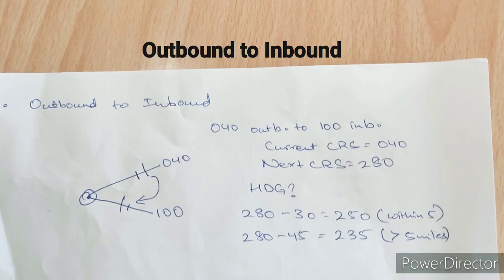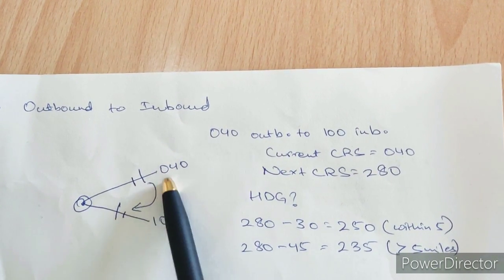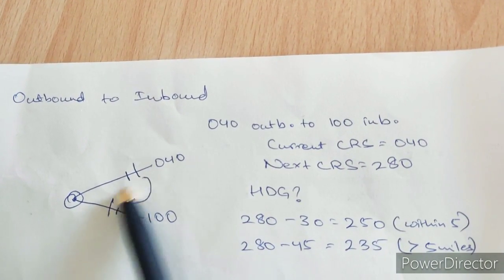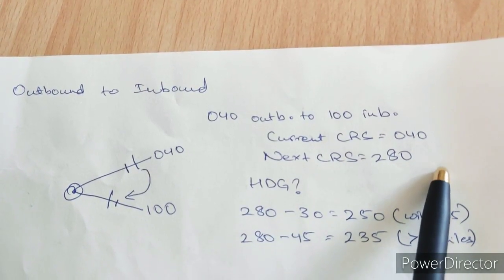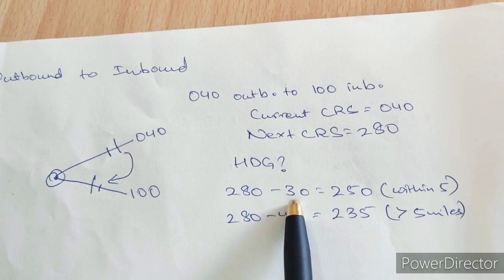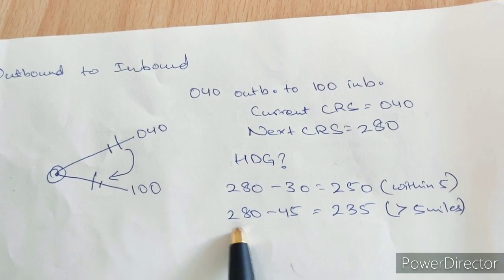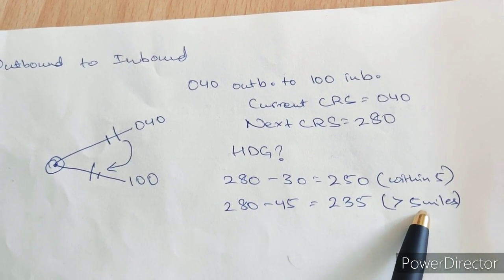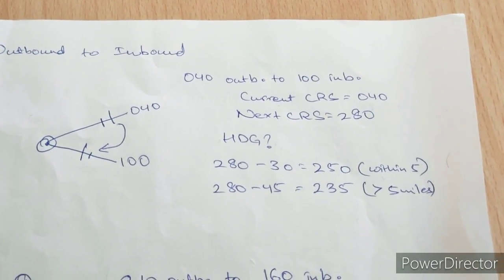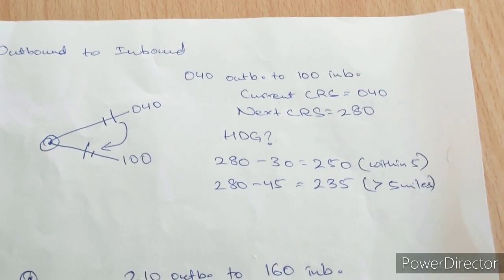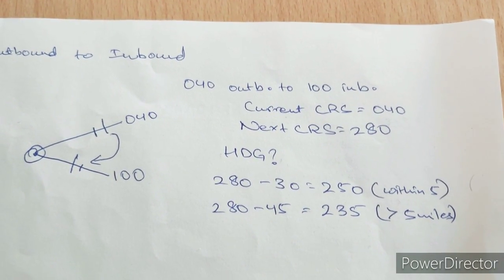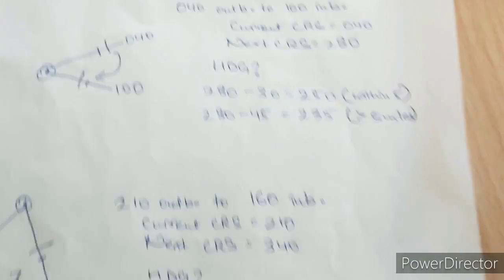Let's talk about outbound to inbound. You are going outbound on radial 040 and need to come inbound on radial 100. Your current course is 040 — the outbound radial. Your next course will be 280 — the opposite of 100. Since you are turning right, the heading correction is towards the left: 280 minus 30 gives heading 250 within 5 miles, or 280 minus 45 gives heading 235 beyond 5 miles. This is similar to the inbound to outbound case — whichever direction you turn, the heading correction is opposite.